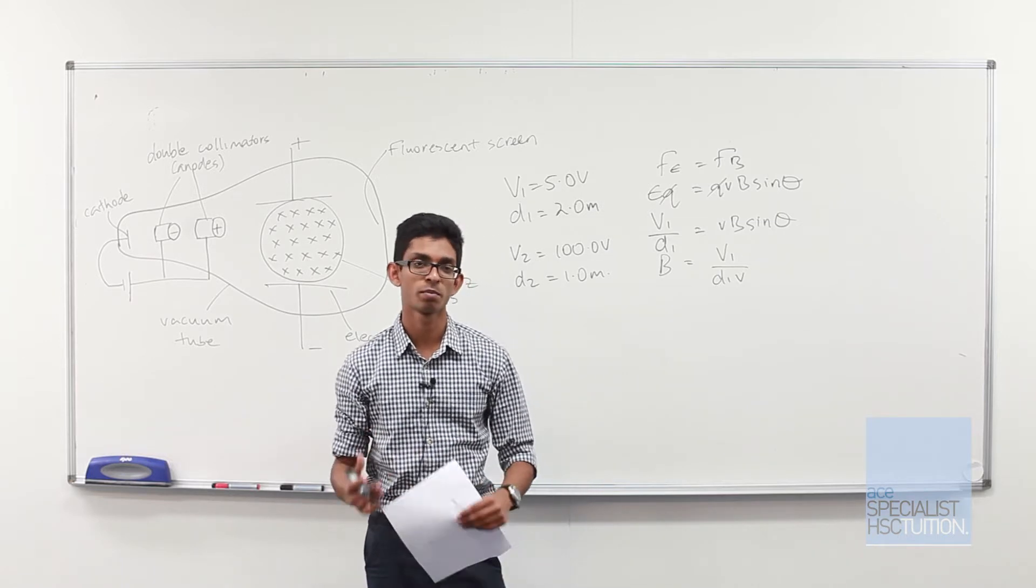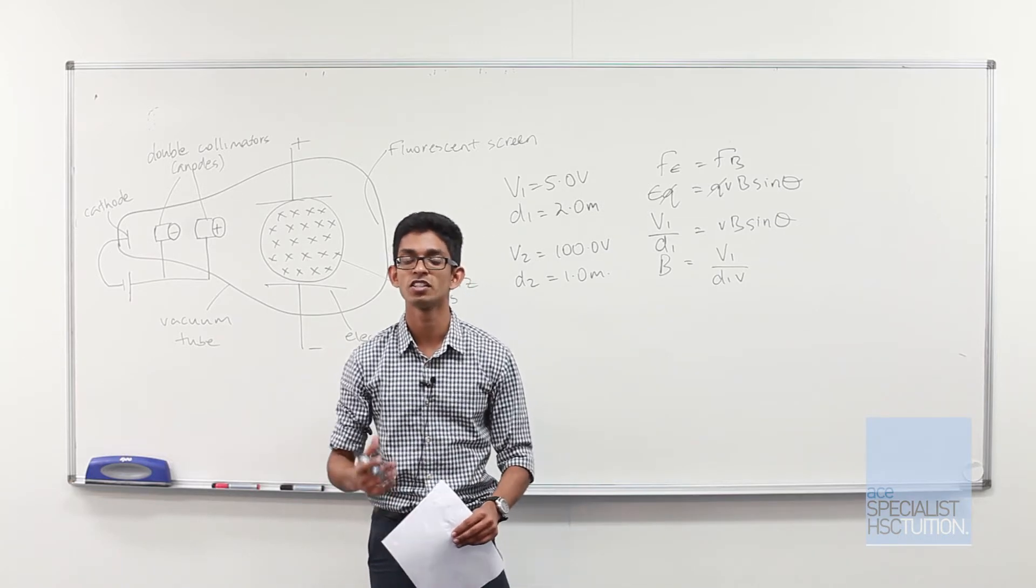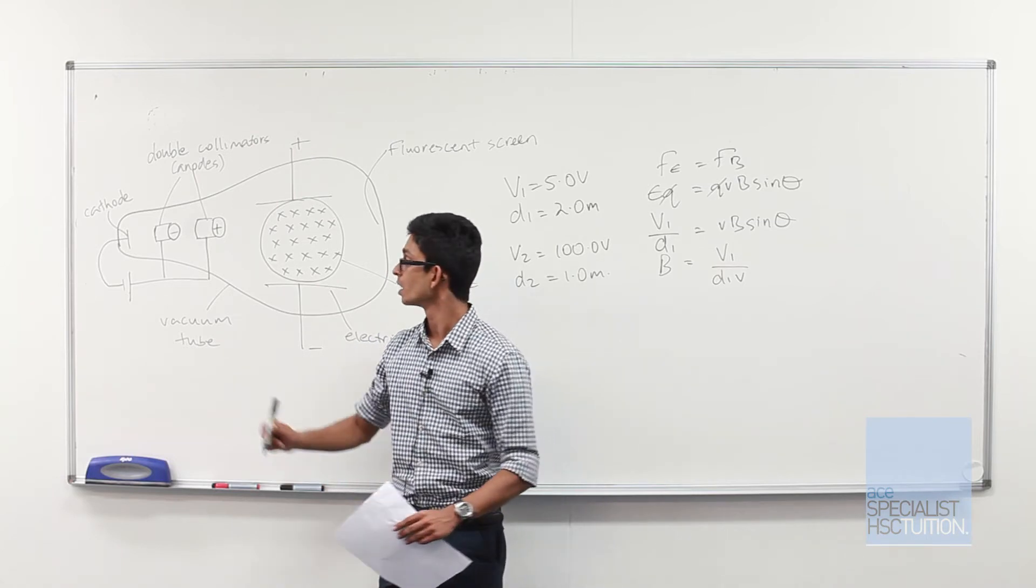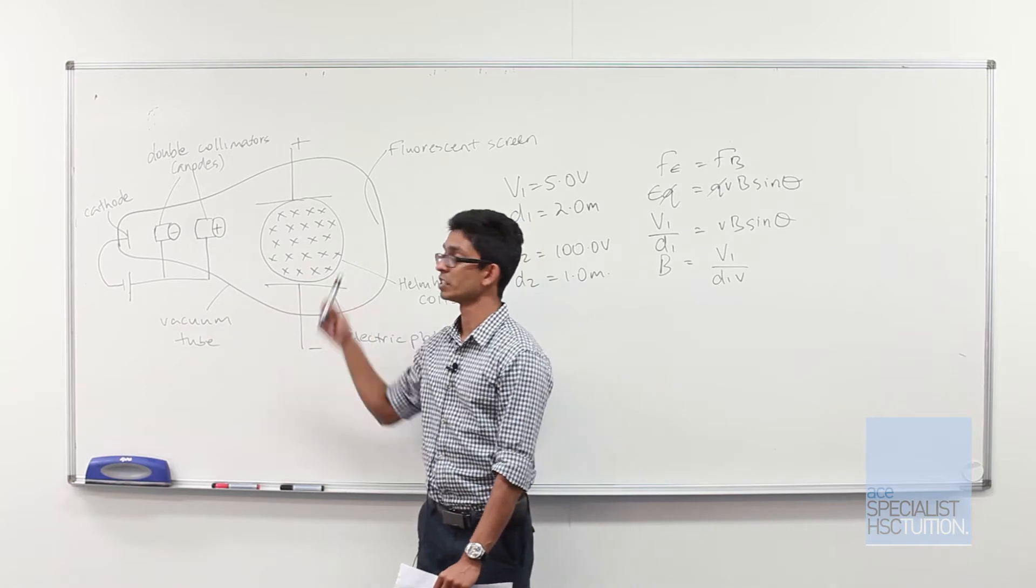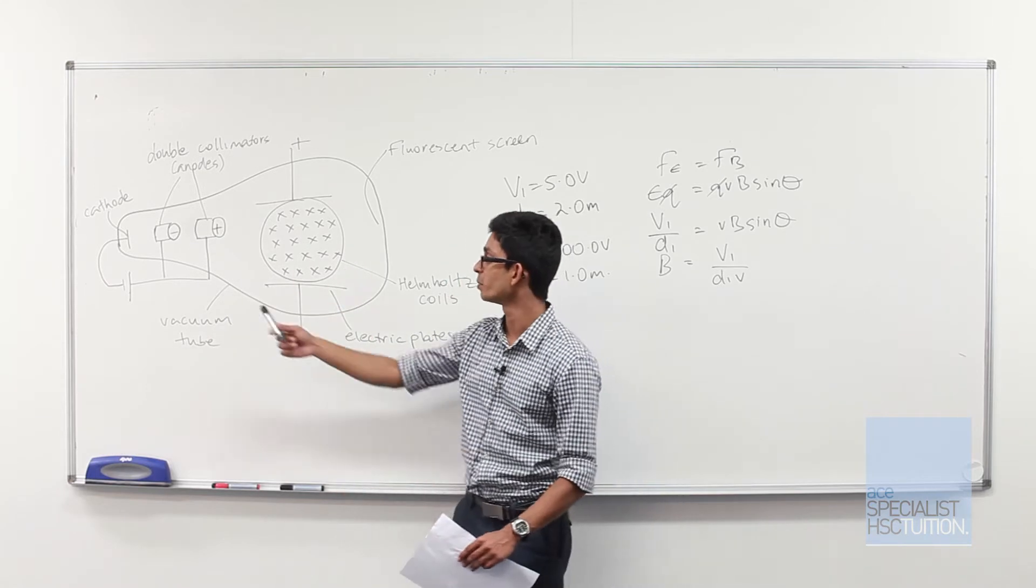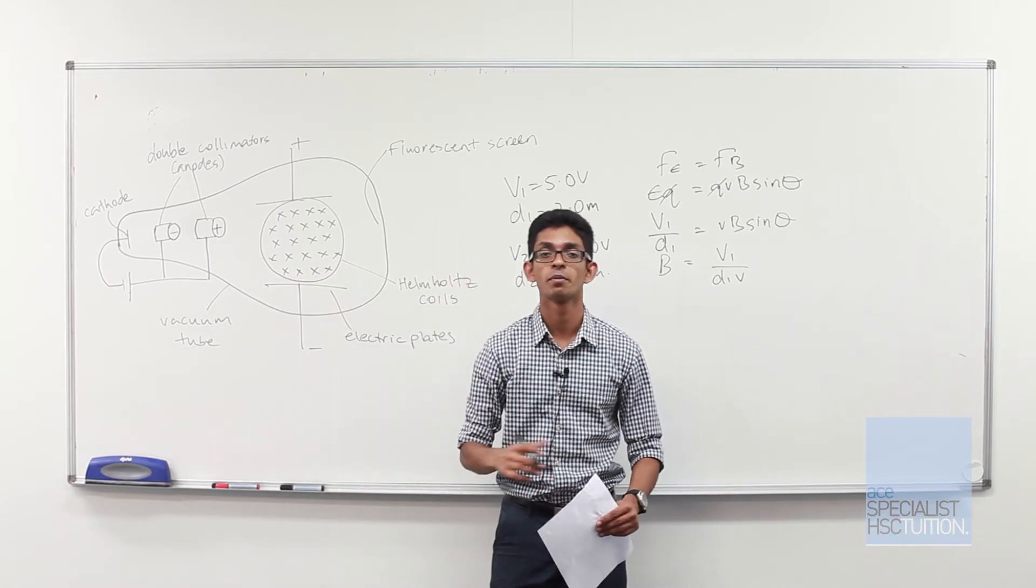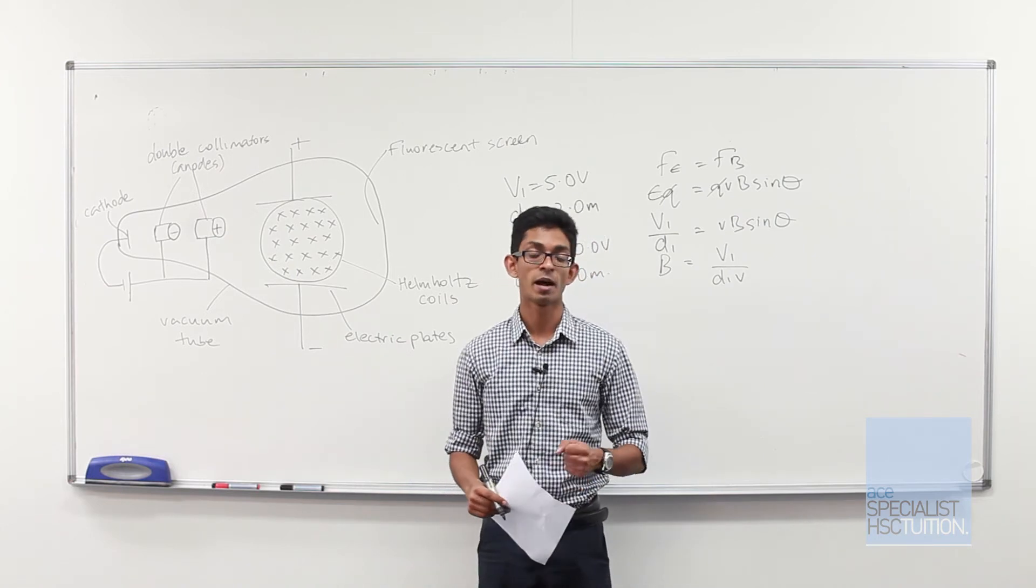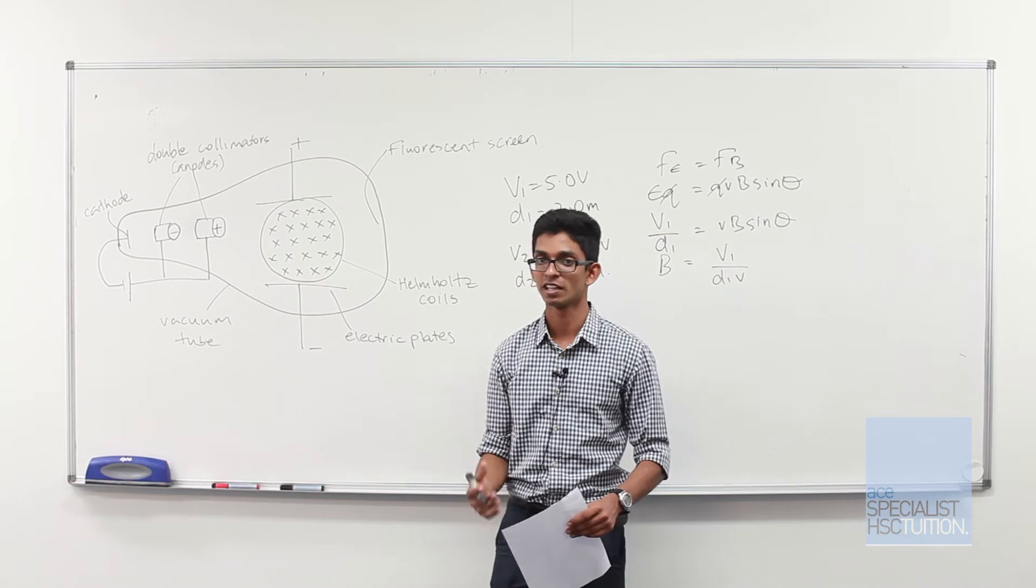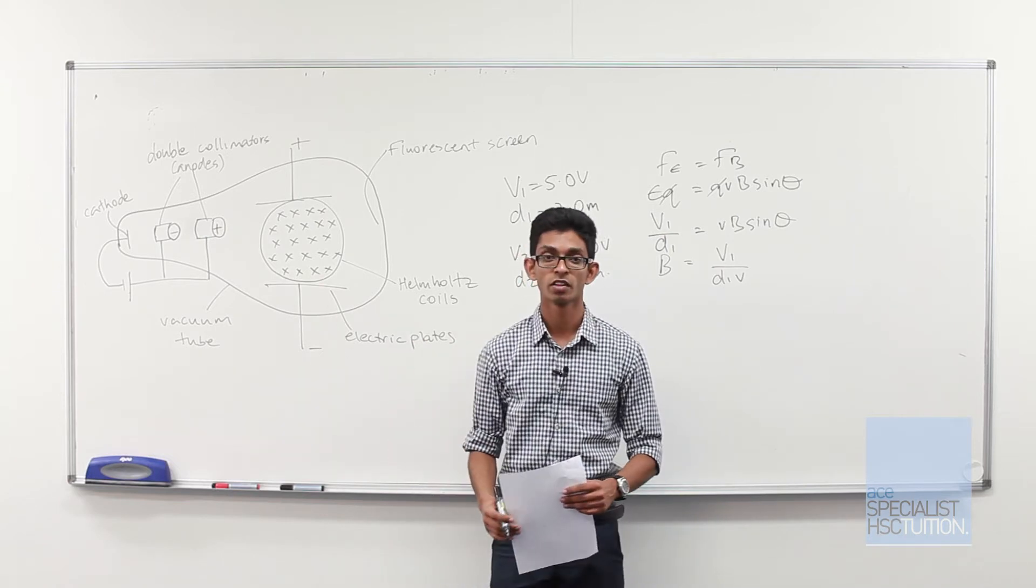Now we can figure this out in a couple of ways, but the simplest way is to use energy transformations. Now we know that the kinetic energy of the electron through this vacuum tube is provided by the cathode and the anode, provided by that electric field. So we can use this knowledge to determine the velocity of the electron through the vacuum tube.